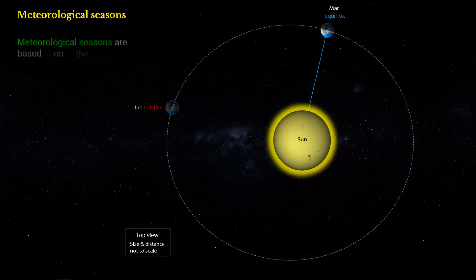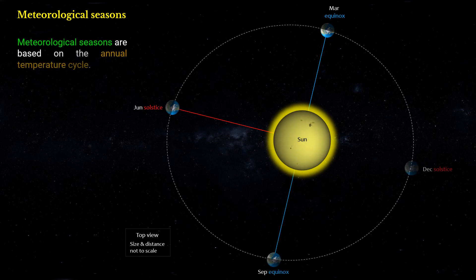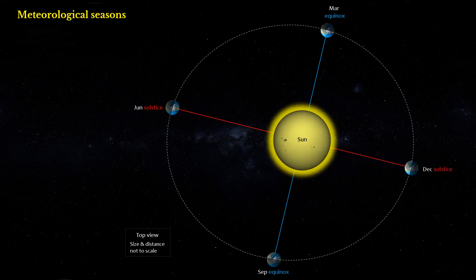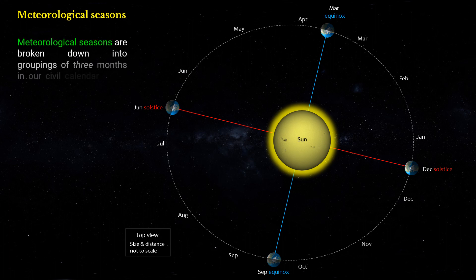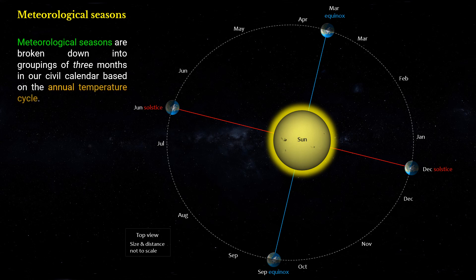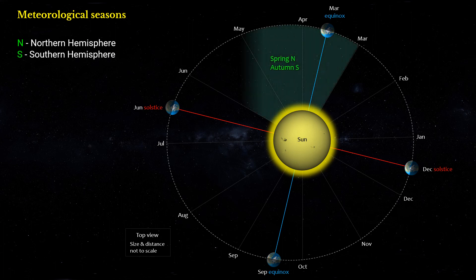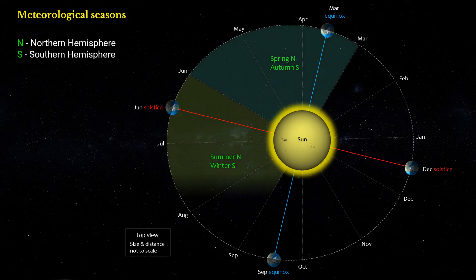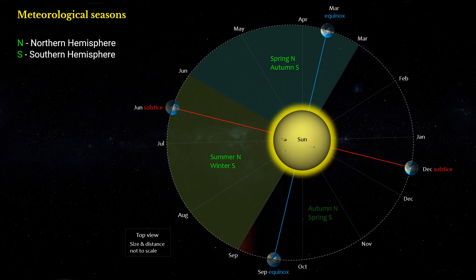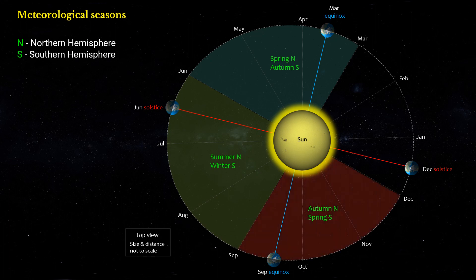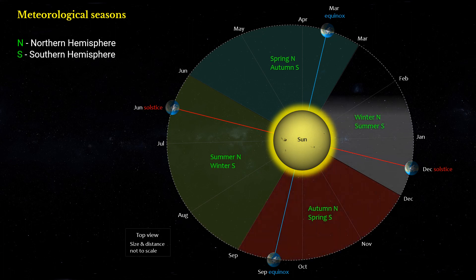Meteorological seasons are based on the annual temperature cycle. They are broken down into groupings of three months in the civil calendar: Spring North/Autumn South, Summer North/Winter South, Autumn North/Spring South, and Winter North/Summer South.